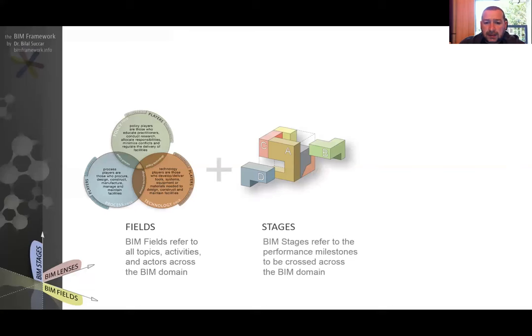The second axis, on the Y-axis, is the BIM stages dimension. BIM stages refer to all the performance milestones that an organization or project team—and even the whole market—would have to pass through, from a pre-BIM status to optimized BIM performance. We'll cover this in detail in a separate video.